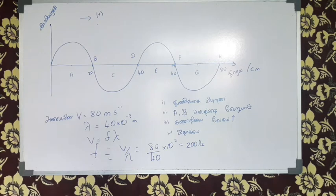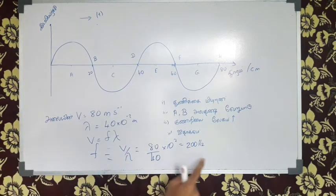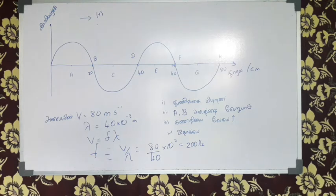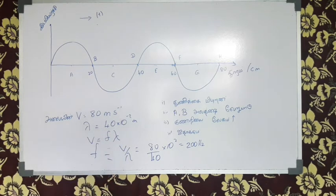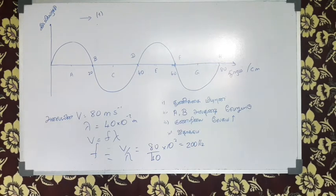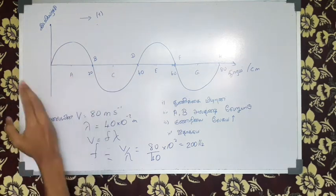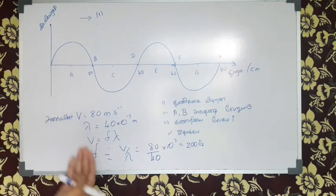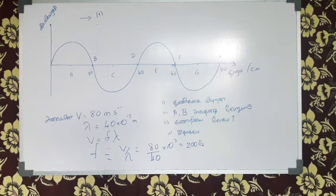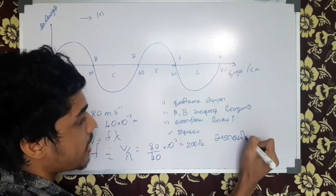So, F7 = V over lambda. V in N M S minus 1. Lambda is 50 cm. So, it's about 20 cm. F = V7, F lambda. We can see it in the beginning — it's about V8. If you don't see it in the beginning, let's see.